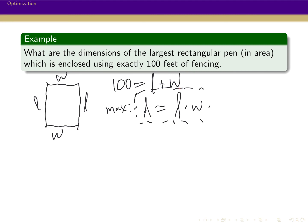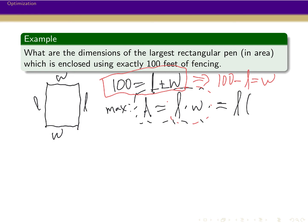I'm looking at length times width, and I need to get this down to one variable. My constraint function 100 equals L plus W lets me solve for either L or W. So I'll rewrite it as W equals 100 minus L, and substitute into the area function: area equals L times (100 minus L). Now this is in terms of a single variable, which means we can do calculus on it.